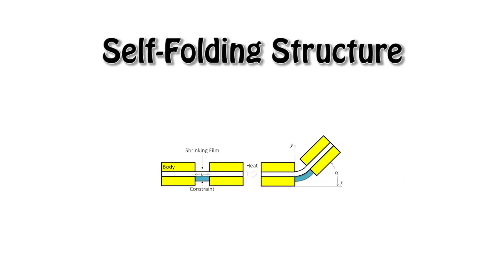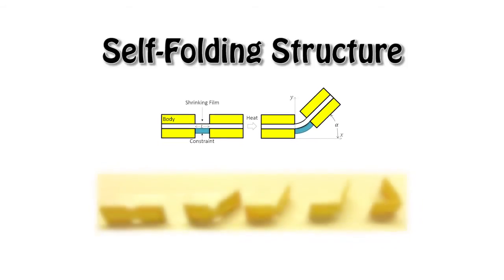The self-folding structure contains an active and a passive material. The active material is the film in the middle, which will shrink under heating. By controlling the gap of exposing the shrinking film, the deformation angle along a hinge can be controlled.